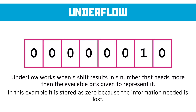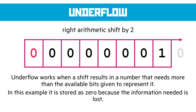Underflow is where a shift results in a number that needs more bits than are available to represent it — specifically to the right — where a number is so small or so fractional that it's very difficult to represent it in the available bits. For example, a right arithmetic shift by two pushes everything right by two and replaces the left with zeros. All we can store becomes zero, even though off to the right there should really be a one and a zero. We've gone from representing a fractional amount to representing zero, losing the meaningful information.